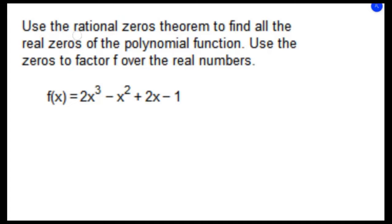In this example we want to use the rational zeros theorem to find all of the real zeros of the polynomial function, and use the zeros to factor f over the real numbers. Our polynomial function is f(x) = 2x³ - x² + 2x - 1.